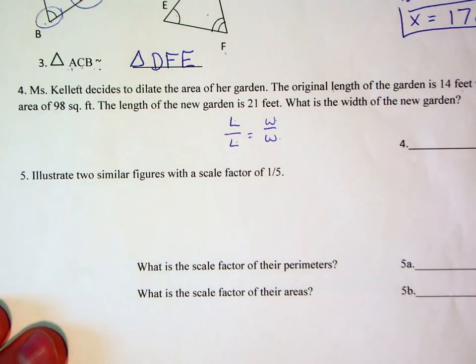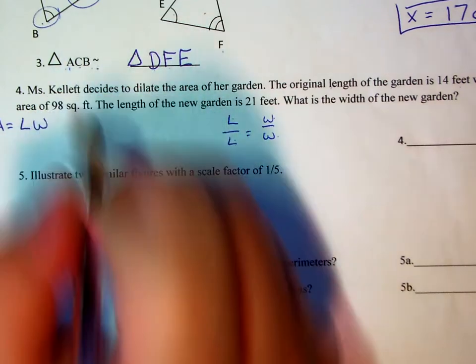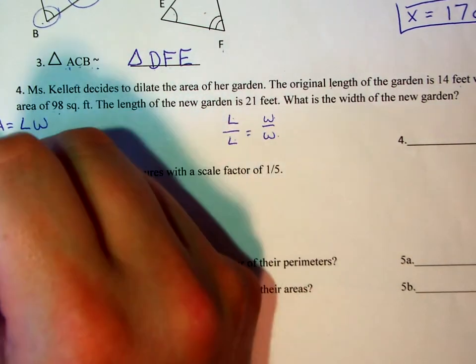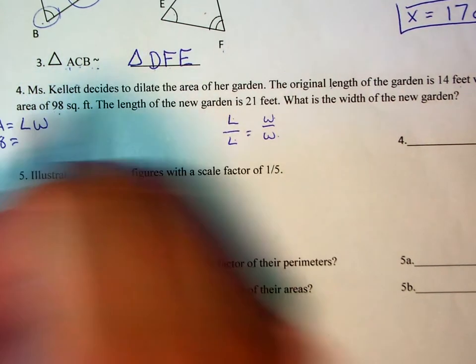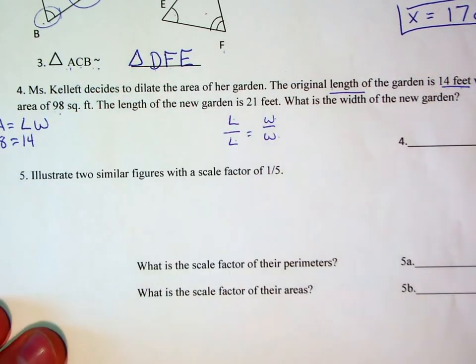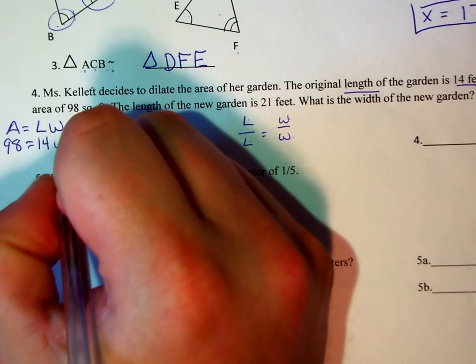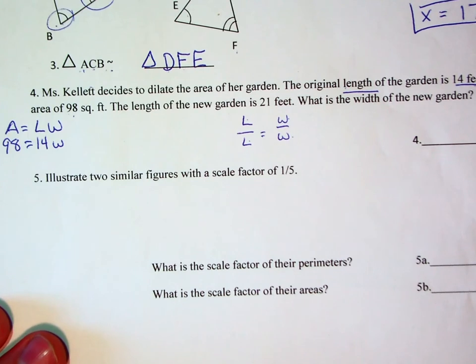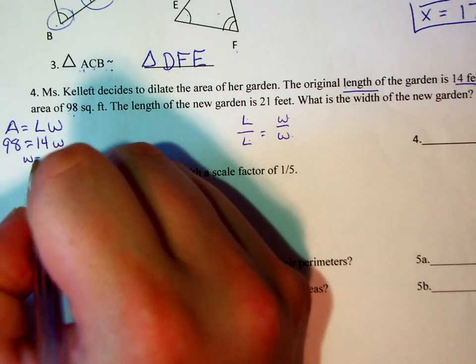And we know that when we have a rectangular shape, area is equivalent to length times width. And so if I'm told that the area is 98 square feet, and we're told that the length is 14 feet, we're still left with the unknown width. So 14 times the width should equal 98, which means we can do a one-step equation to solve backwards and determine that our value for W is equal to 7.